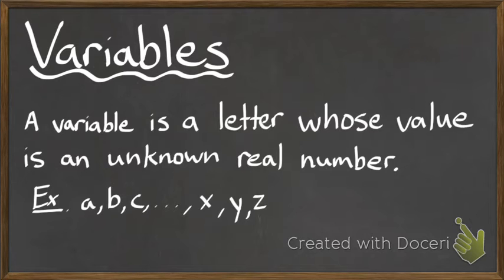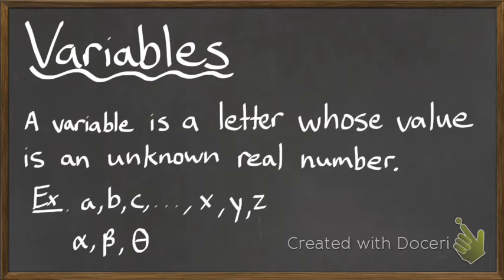In some cases in mathematics, you might see some weird-looking letters, or Greek letters — for example, alpha, beta, or theta. Theta is a very common one that they typically use to measure angles. Essentially, a variable is just some unknown number that is assigned a value, or it's an unknown that we're trying to find the value of.